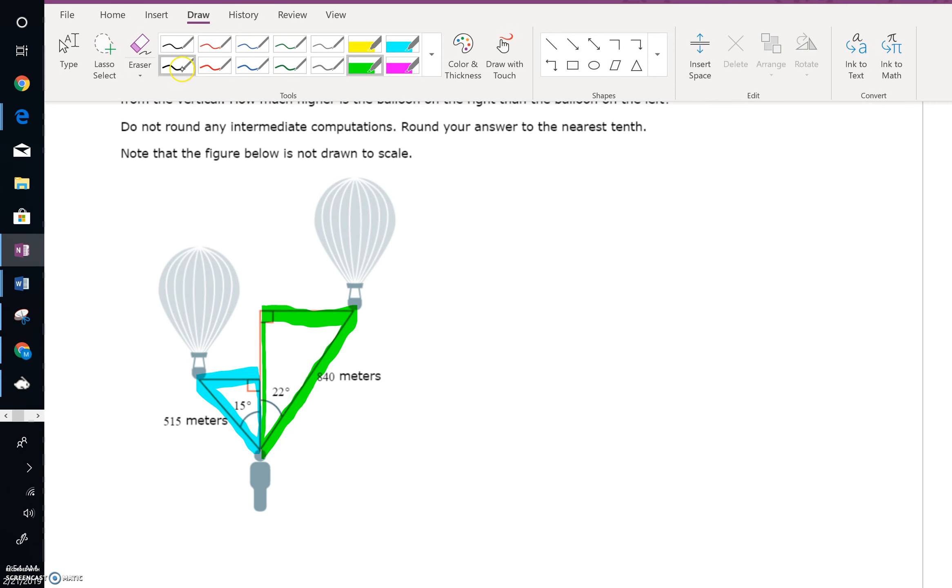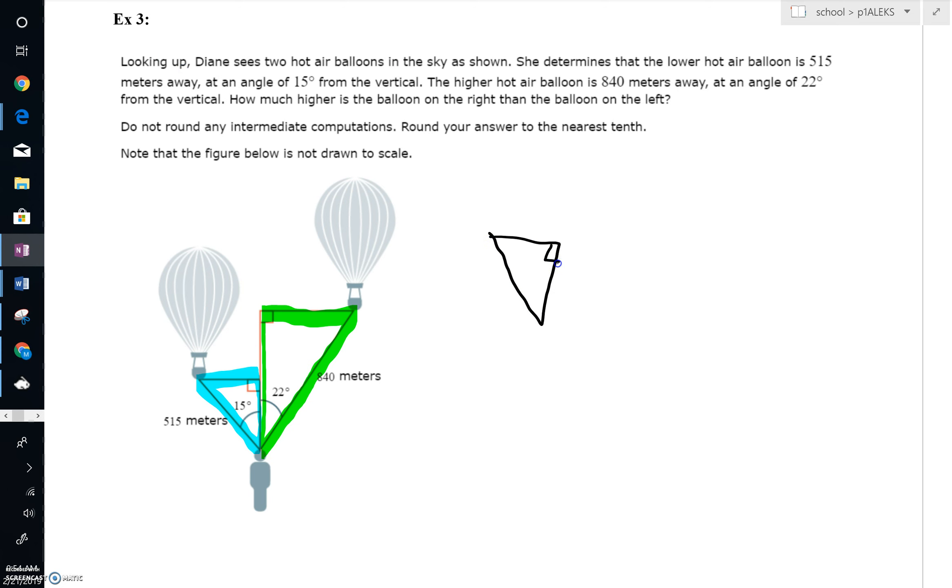Let's go ahead and work with this triangle in blue. Here's 515. Here's 15 degrees. When we're talking about heights, we have to go vertical. So I'm going to call this X. And then we're going to have our green triangle over here. Here's 22 degrees. Here's 840 meters. If we're going to talk about the height of that balloon, we have to go straight up and down. I'm going to call that Y. And we're going to label our triangles real quickly. This is our hypotenuse. Wow, we're using hypotenuse today. The X is adjacent. Over in this other triangle, once again, this is a hypotenuse. And this Y here is also adjacent.